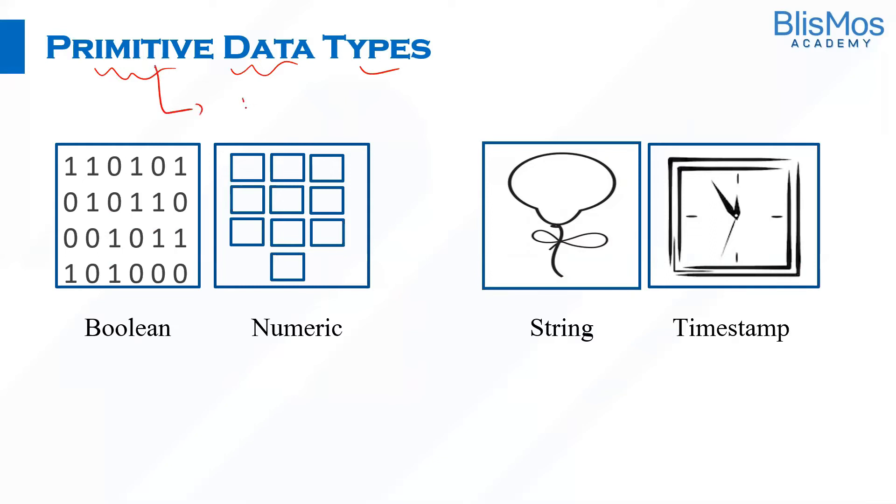Primitive data types are fundamental data types. We have boolean, numeric, string, and timestamp as the primitive data types in Hive. We do have complex data types in Hive, but we'll tackle that in upcoming lectures. We'll see all these primitive data types as part of this lecture.